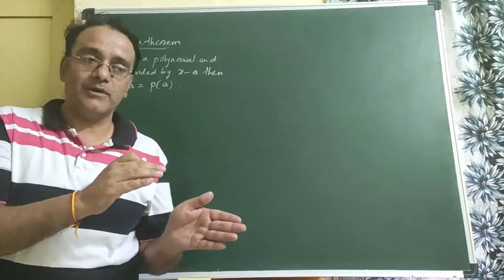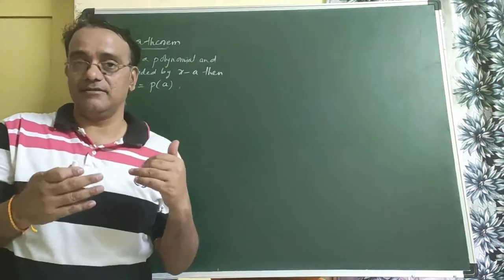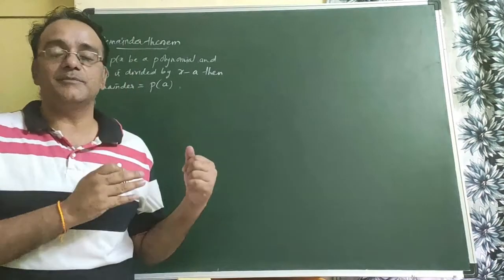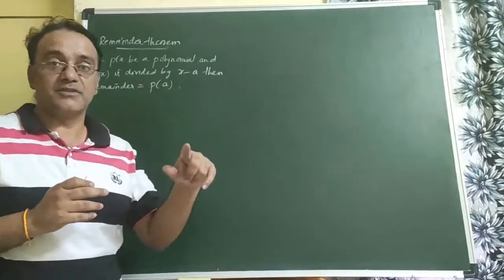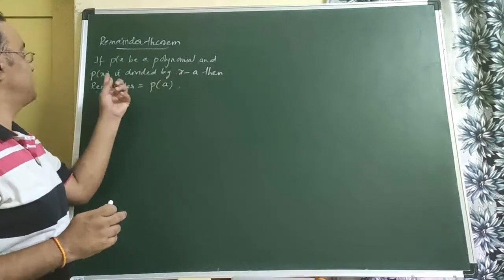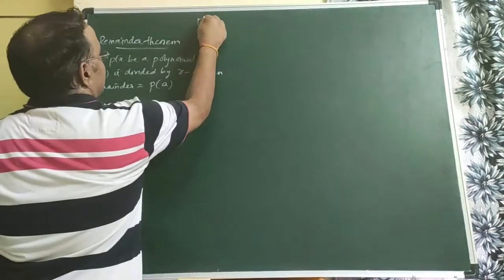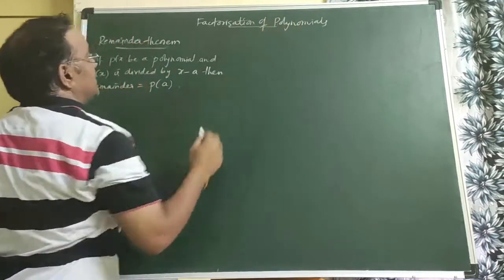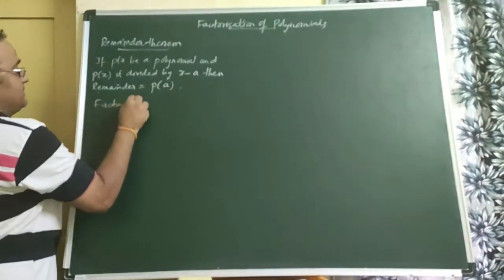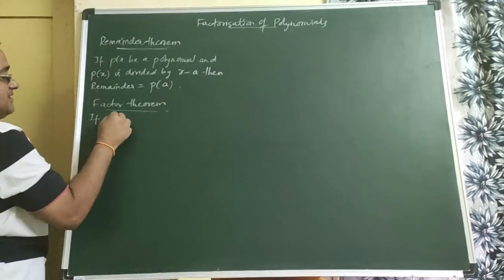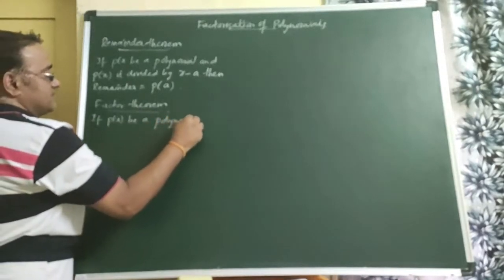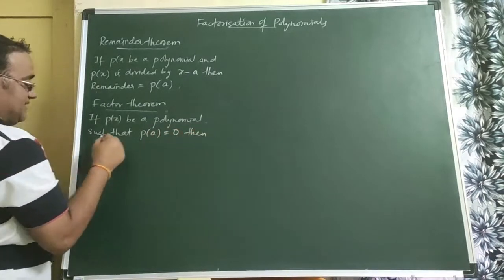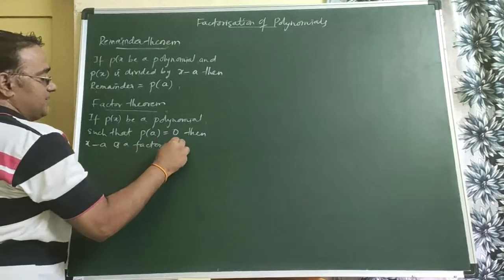Now, in the Remainder Theorem, one type of question involved checking for a factor — we checked whether the remainder is equal to zero. The same concept is used in the Factor Theorem: if P(a) = 0, then (x − a) is a factor of P(x). So in today's topic, Factorization of Polynomials, we will complete the Factor Theorem. If P(a) = 0, then (x − a) is a factor of P(x).